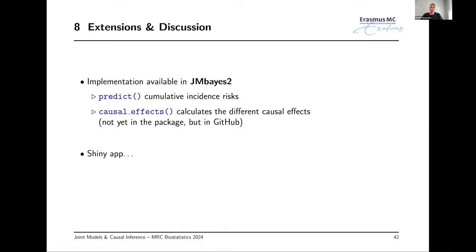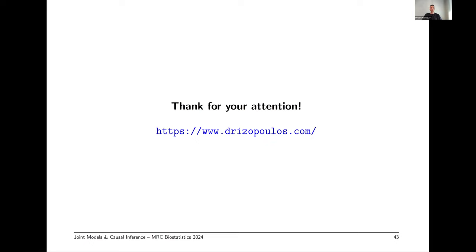In conclusion, motivated by this prostate cancer study, we have seen how to estimate conditional, marginal, and marginally-conditional causal effects from joint models. These are available in the JMBayes2 package via the predict function for cumulative risks. We also have a causal_effects function currently on GitHub — not yet in the package — that provides the full machinery to estimate causal effects and their variance. All of this is freely available. Thank you for your attention; I'll be glad to answer any questions.